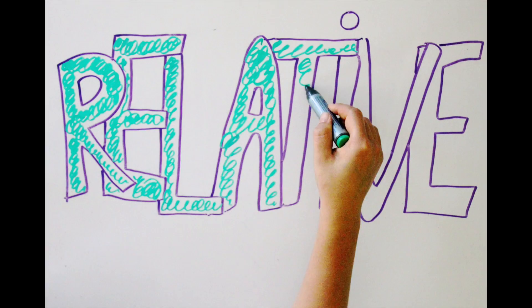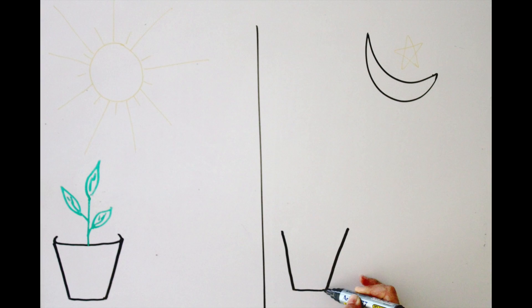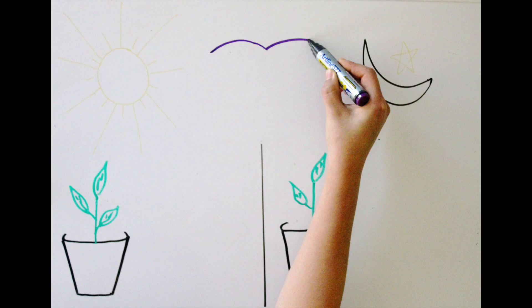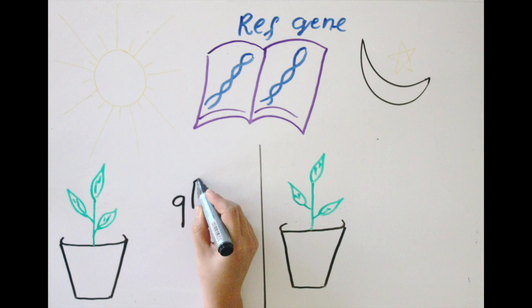On the other hand, relative quantification is used when you want to compare the difference in gene expression between two treatments, for example, light or dark treated Arabidopsis individuals. This is done using one or more reference genes, such as actin, which are expressed at the same level for both treatments.